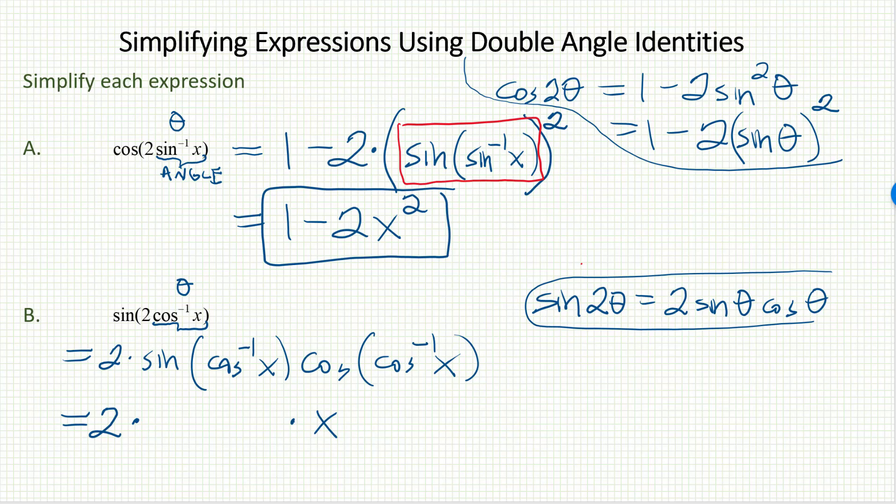For that middle piece, though, sine of cosine inverse x, I'm going to have to draw a picture. We've done this several times. This is a composition of a trig function and an inverse trig function. I want to know the sine ratio of the angle whose cosine ratio is x. We'll assume x is positive in the first quadrant. Let me go ahead and draw a reference triangle picture here.